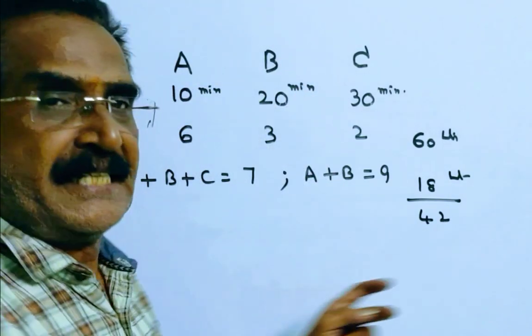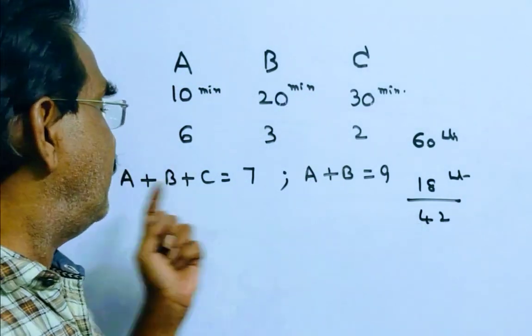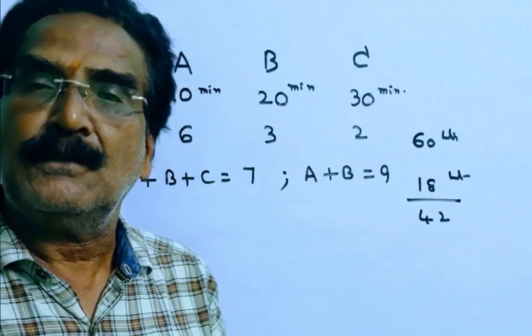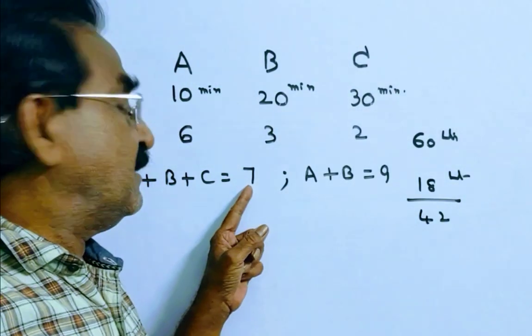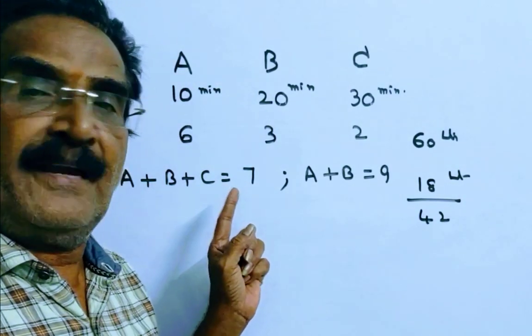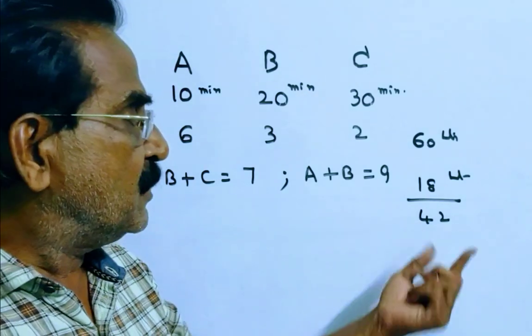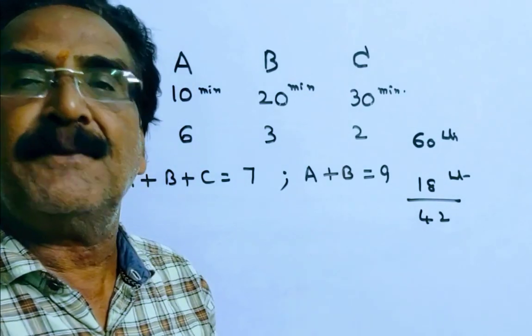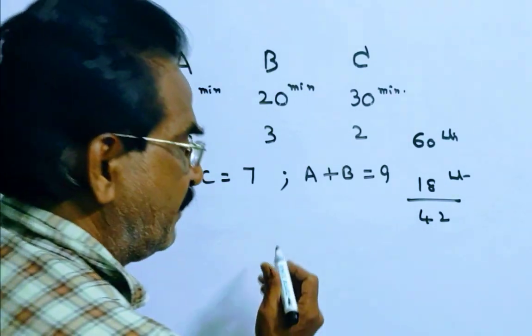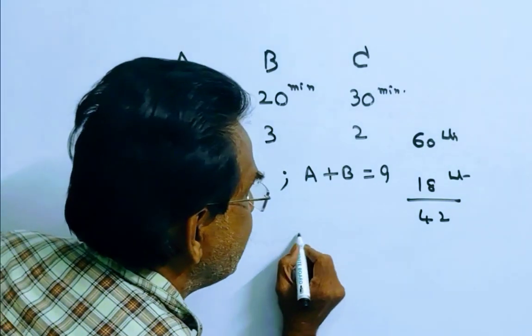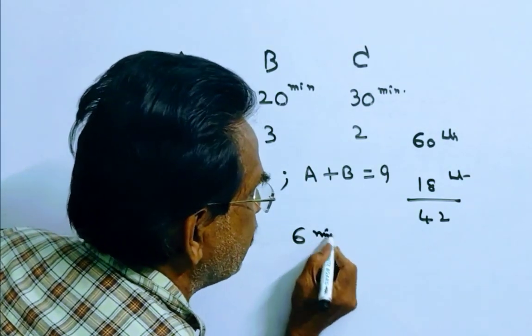So the remaining 42 liters filled by all the pipes together. Friends, all the pipes together can fill 7 liters per minute. So this 42 liters can be filled in 42 by 7, in 6 minutes.